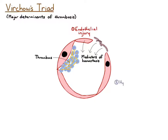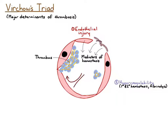The second determinant is hypercoagulability, or a procoagulant state. This is a disruption of primary and secondary hemostasis, as well as fibrinolysis. The third determinant is altered blood flow — so the blood flow is somehow being changed through the blood vessels.